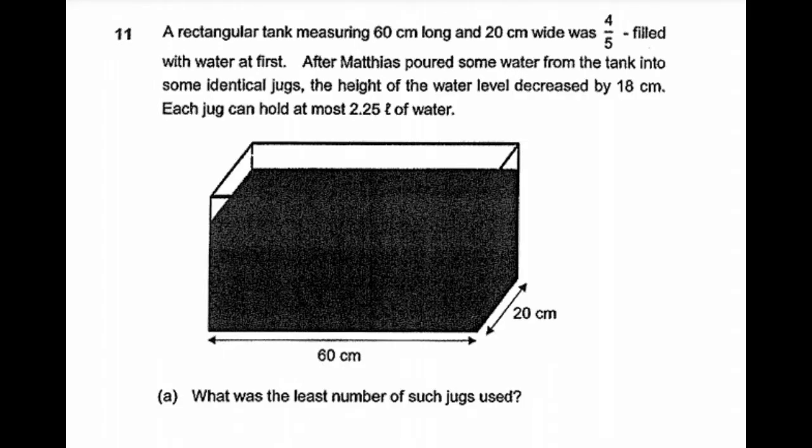A rectangular tank measuring 60 cm long and 20 cm wide was four-fifths filled with water at first. After Matthias poured some water from the tank into some identical jugs, the height of the water level decreased by 18 cm. Each jug can hold at most 2.25 litres of water. What was the least number of jugs used?